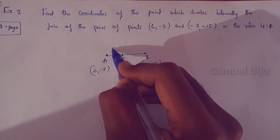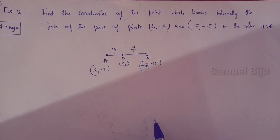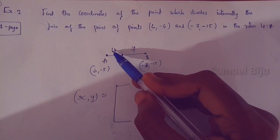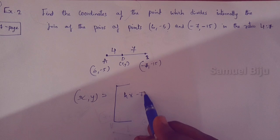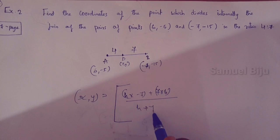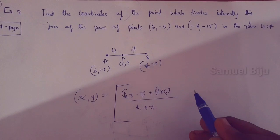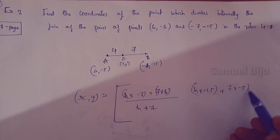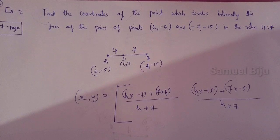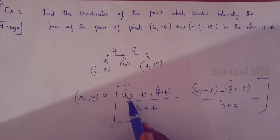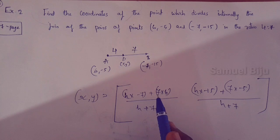m is 4 and n is 7. Directly applying the formula: x equals 4 into minus 7 plus 7 into 6, divided by 4 plus 7. That gives 4 into minus 7 plus 7 into 6 — that is minus 28 plus 42, divided by 11.